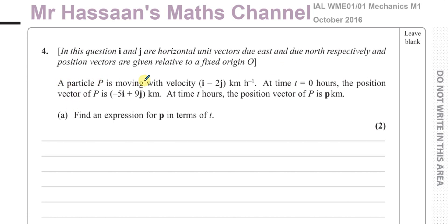It says a particle P is moving with velocity i minus 2j kilometres per hour. At time equals 0 hours the position vector of P is minus 5i plus 9j kilometres. At time t hours the position vector of P is p kilometres. Find an expression for p in terms of t.